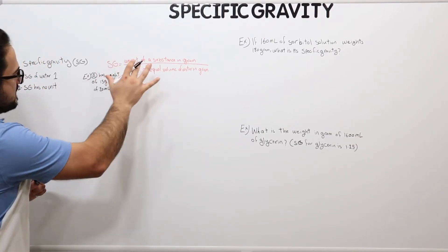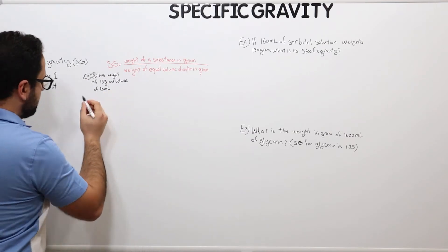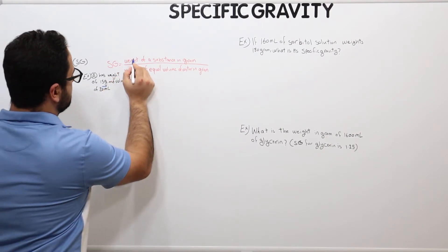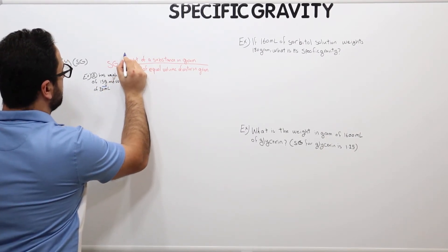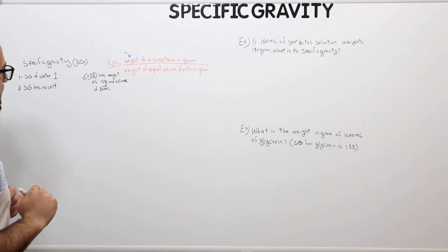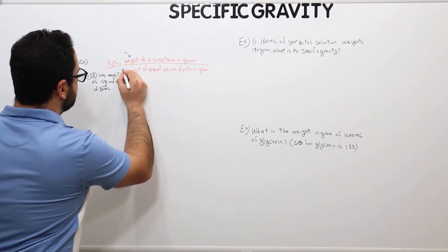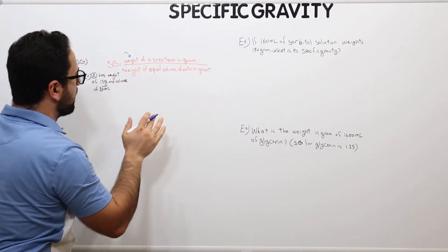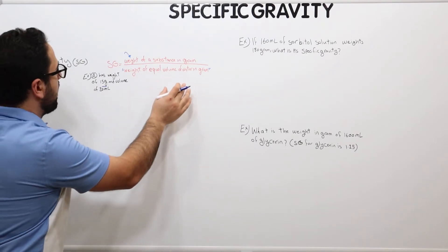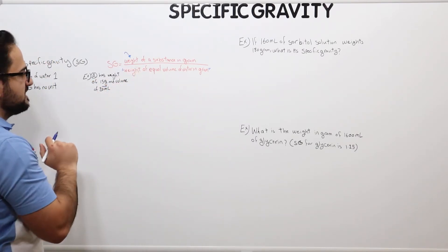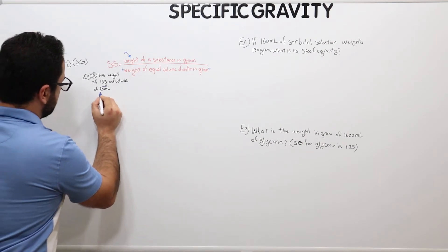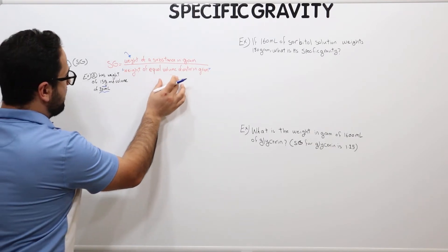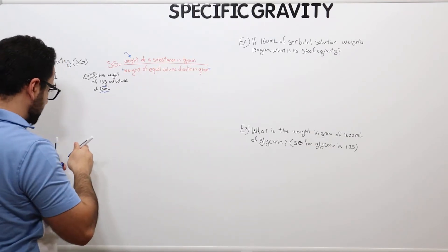Substance A has a volume of 20 milliliters. So when it comes into this equation, the 15 grams goes on top. The bottom part means the weight of equal volume of water — so the volume of water equal to the volume of the substance, which is also 20 milliliters.